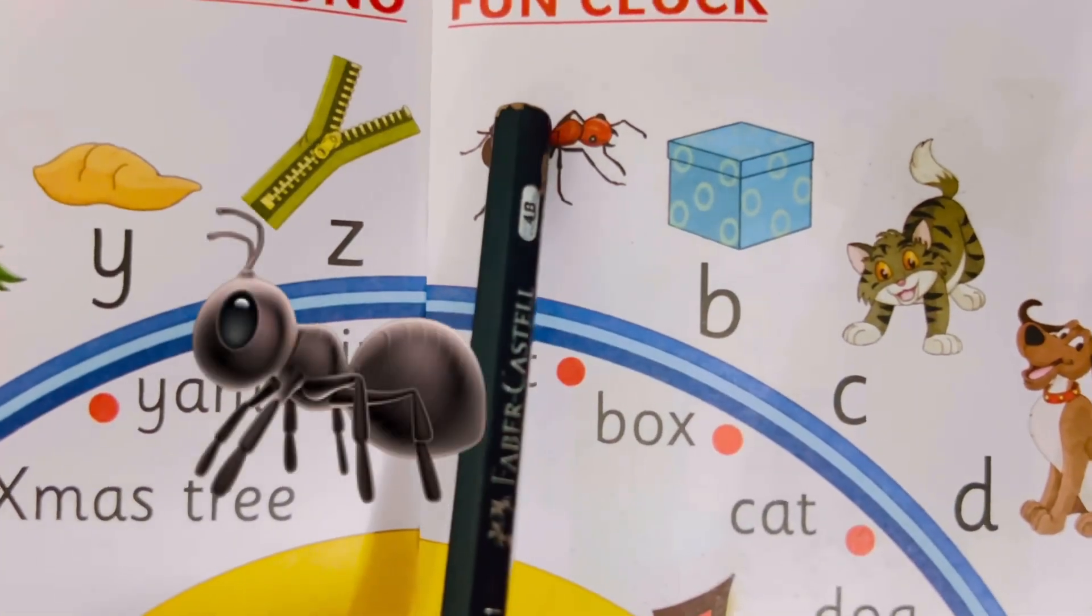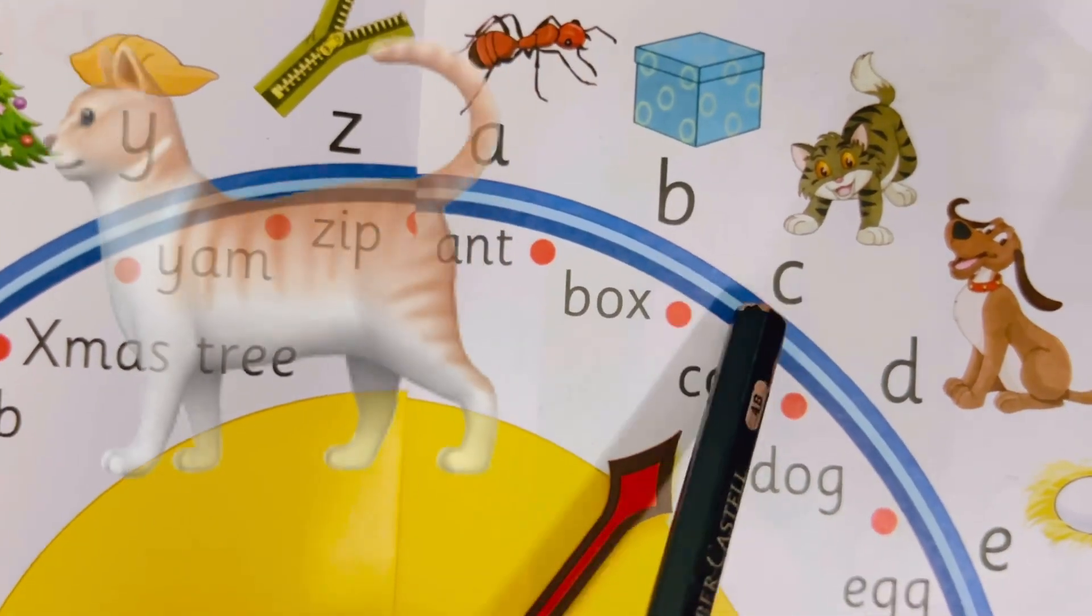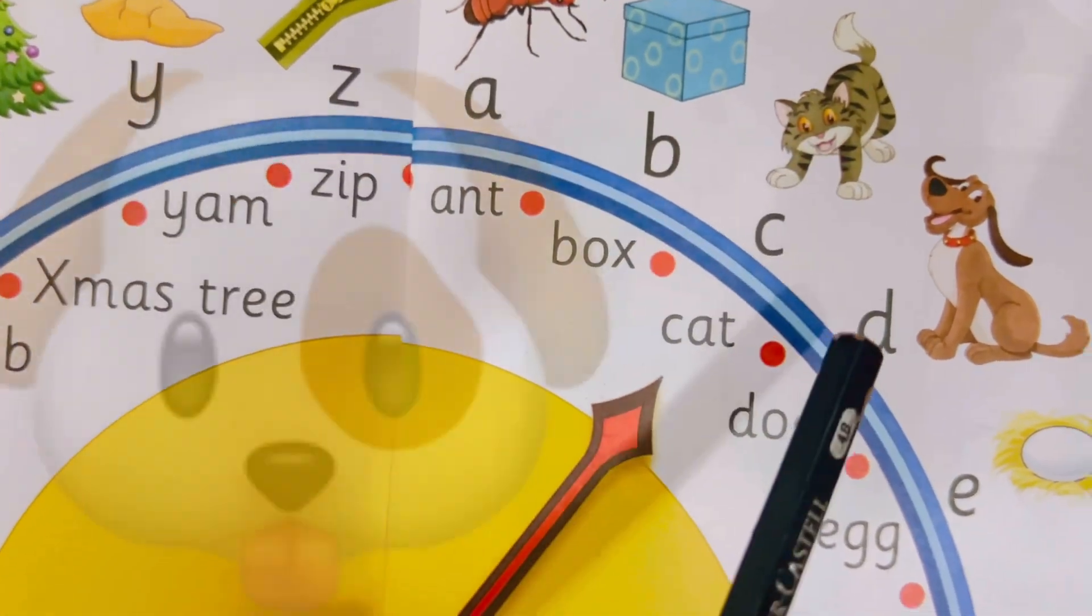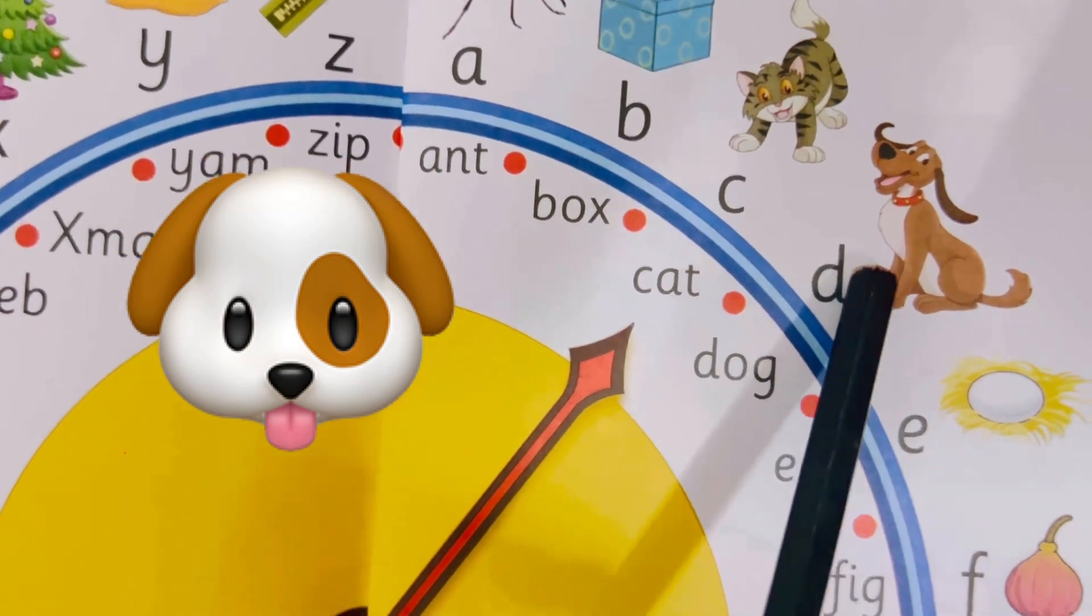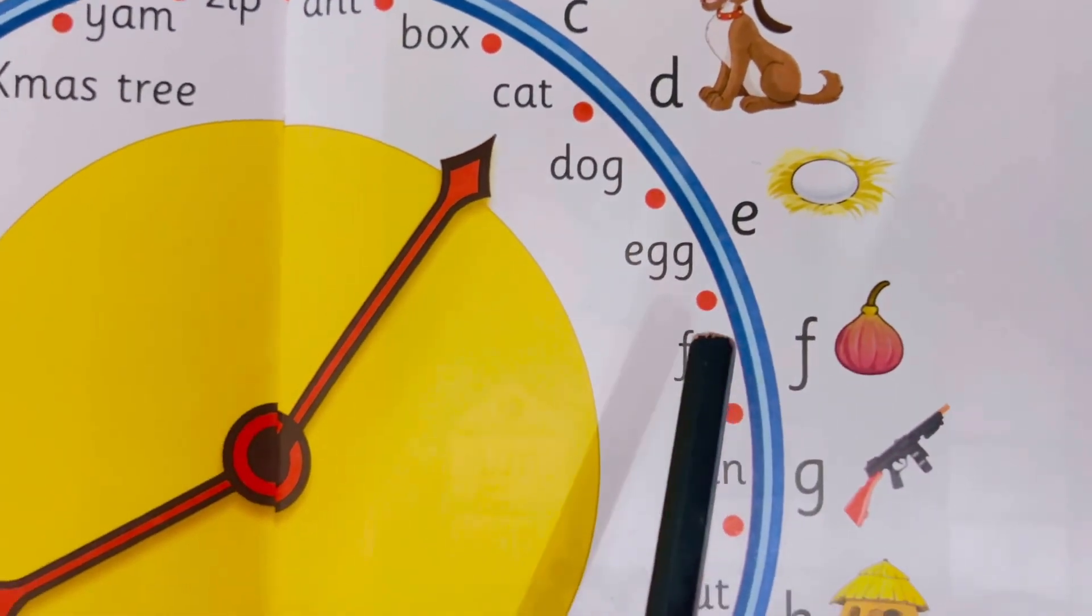A, A, Ant. B, B, Box. C, C, Cat. D, D, Dog. E, E, Egg. F, F, Fig.